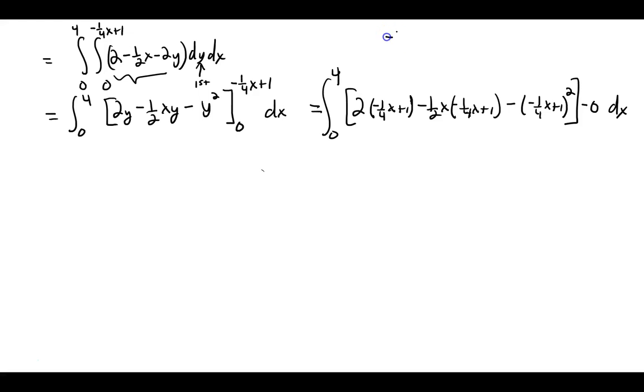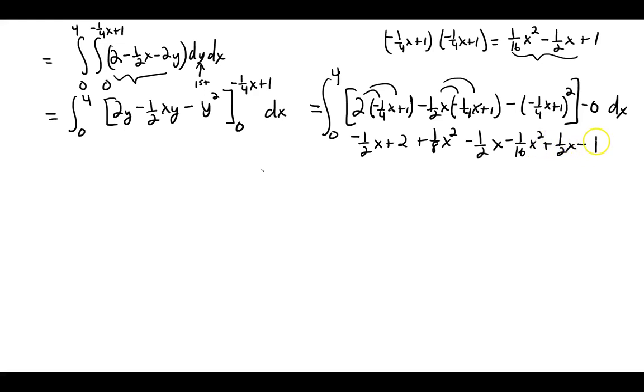Let me quickly square that. What is negative 1 fourth of X plus 1 squared? It's going to be 1 sixteenth of X squared minus 1 half of X plus 1. Let's go ahead and distribute across here. We'll have negative 1 half X plus 2, positive 1 eighth X squared minus 1 half X. Then we'll take the opposite of all of this: minus 1 sixteenth of X squared plus 1 half of X and a minus 1.